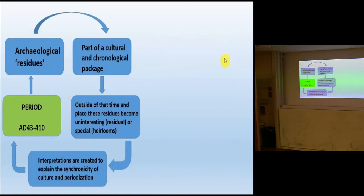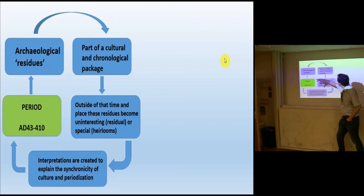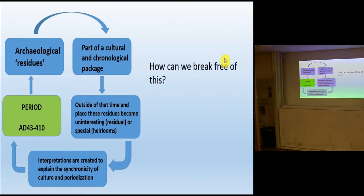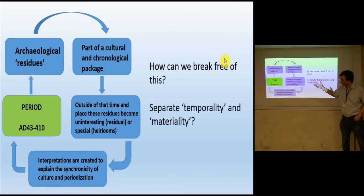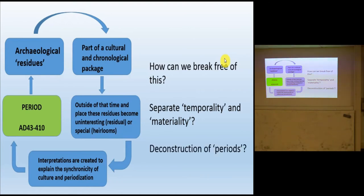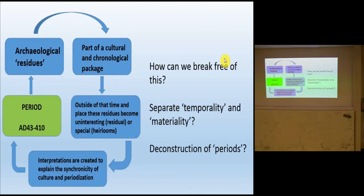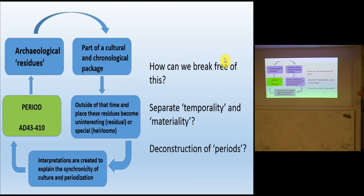Returning to the diagram showing the flow of information and interpretation: where are we left? We have to ask ourselves, should we try and break free of this? Should we think of other ways of thinking about our material? How do we separate temporality from the materiality of our assemblages? Should we actually engage in a deconstruction of our periods? I'm not sure what we'd replace them with, but perhaps there is some value in thinking about whether those period boundaries — which are also disciplinary boundaries and can also be institutional boundaries — are actually helpful to us in understanding the past.